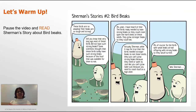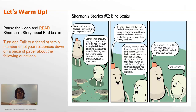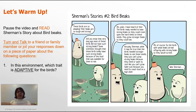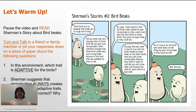Let's warm up. Pause the video and read Sherman's story about bird beaks. Turn and talk to a friend or a family member, or jot your responses down on a piece of paper about the following questions after you read Sherman's story: In this environment, which trait is adaptive for the birds? Sherman suggests that reproduction always creates individuals with adaptive traits — does this seem correct? Why or why not?